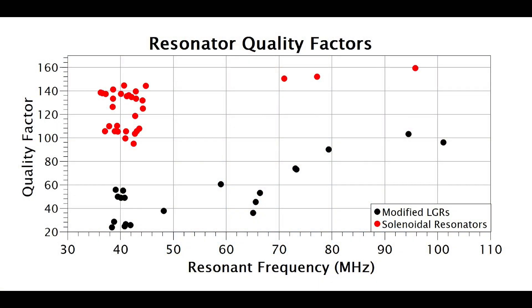Here are the resonator quality factors plotted against their resonant frequency in megahertz, where the modified loop gap resonators are shown in black and the solenoidal resonators are shown in red. It is evident that even the worst solenoidal resonator for a given frequency is still significantly better than the best loop gap resonator.